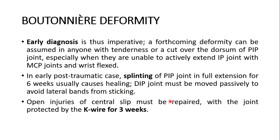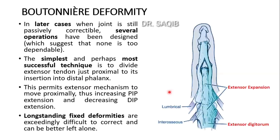Open injuries of the central slip must be repaired with the joint protected by a K-wire for three weeks. In later cases when the joint is still passively correctable, several operations have been designed, though none is too dependable. The simplest and perhaps most successful technique is to divide the extensor tendon just proximal to its insertion into the distal phalanx — we divide the central tendon near its insertion into the middle phalanx. This permits the extensor mechanism to move proximally, thus increasing proximal interphalangeal extension and decreasing distal interphalangeal joint extension.